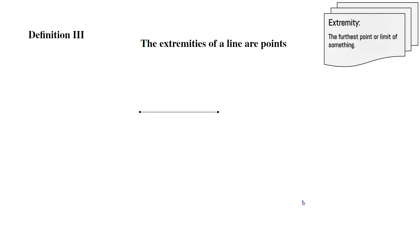Definition 3: The extremities of a line are points. Now an extremity is the furthest point or limit of something. So the furthest point or limit of a line are the points.